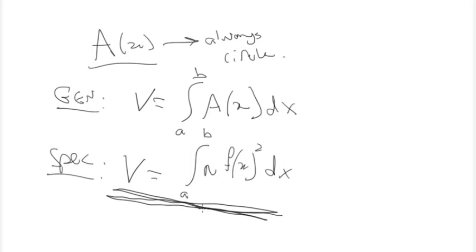There's another method in your book called the shell method for figuring out volumes like this, and there is no problem you will encounter on the AP that you can't solve using the revolution method. The revolution method is also a lot easier to visualize, so that's the only one I'm focusing on. But if you want to look at the shell method, feel free — your book describes it very well.